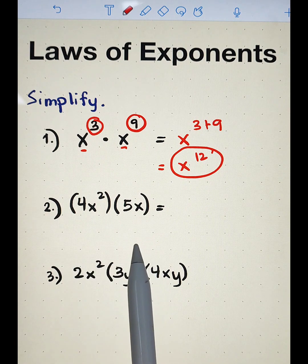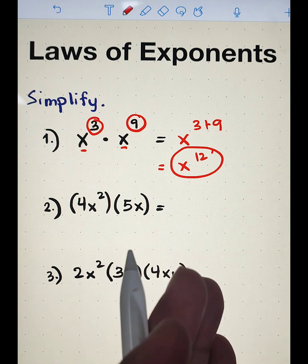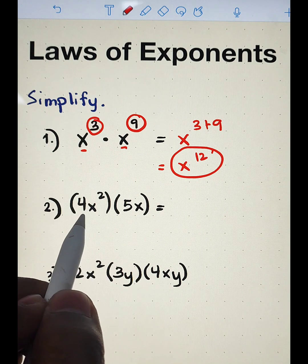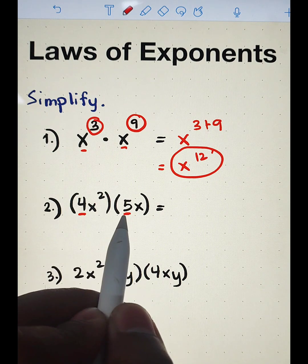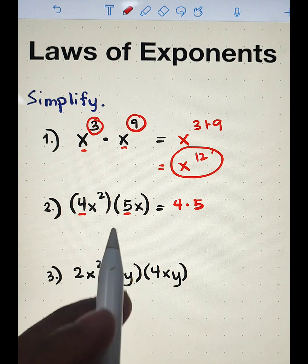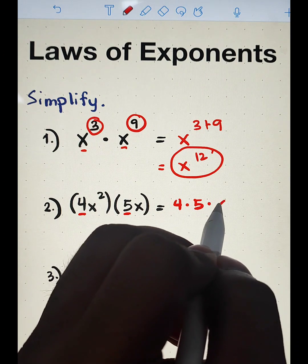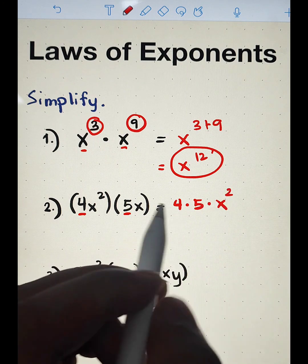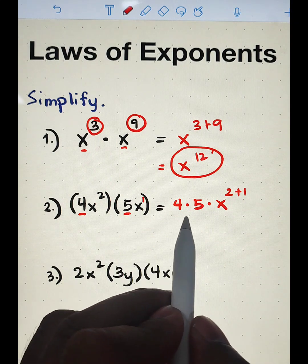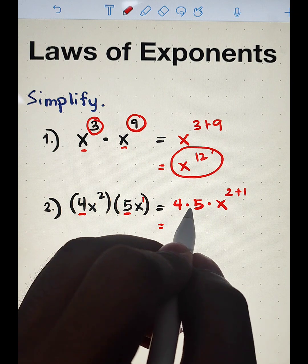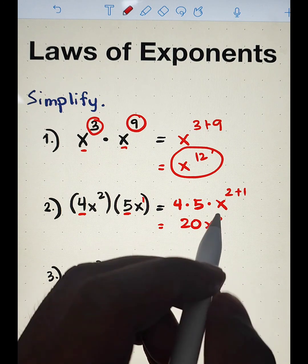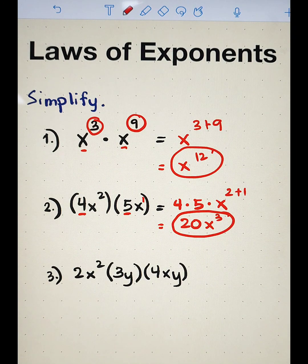In number two, we can also apply the product rule. The difference between number two and number one is that it has a constant or coefficient. So we will multiply first the numbers 4 and 5 — that is 4 times 5. For the variable x, copy the variable x, and add the exponents. We have 2, and there is an invisible exponent of 1, so that is plus 1. Simplifying this gives us 4 times 5 which is 20, and for the variable x, that is x raised to the third power. This is the product of item number two.